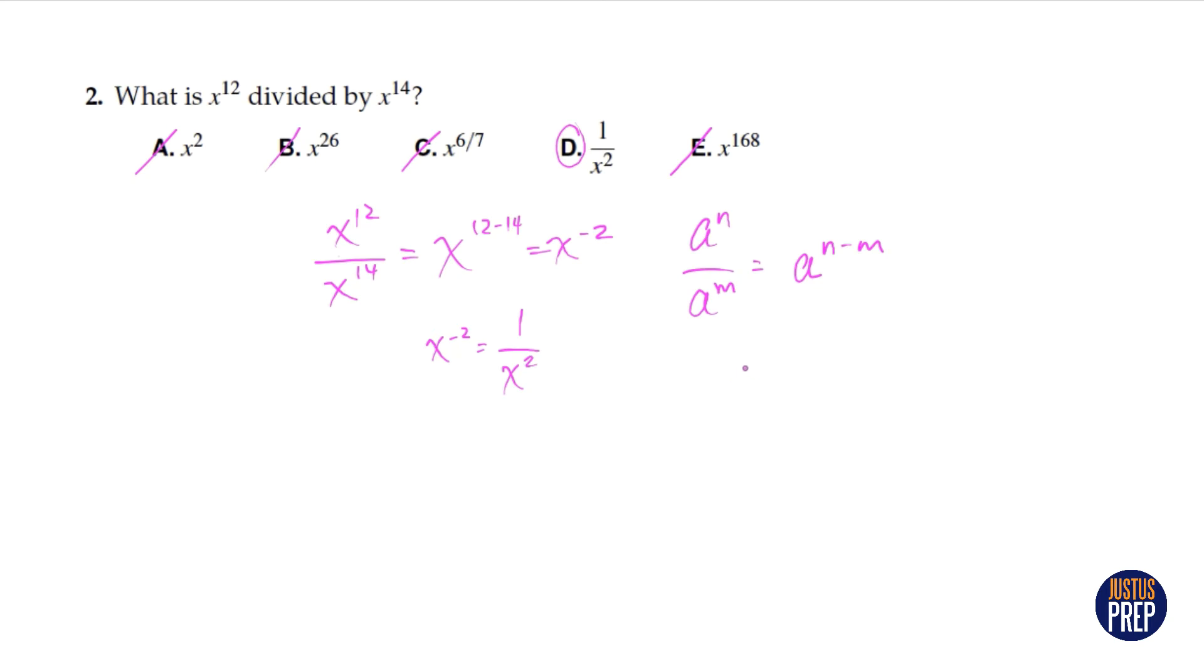Another way to think about this question is imagine 12 x's in a row on the top here, and then imagine 14 of them. If we were to cross out all 12 here with the 12 that are here, there are actually two more x's on the bottom if we crossed all these out. So we would have really one over x times x, which is one over x squared.